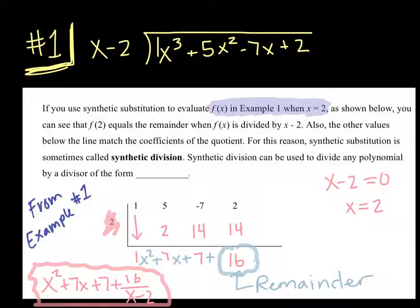This only works if you have an x with a coefficient of 1 and then plus or minus some number. So you can't divide using synthetic division if it's 3x plus 2 or 5x plus 1. It has to be 1x plus or minus some number. That's the only way you can use synthetic division.